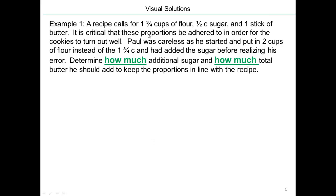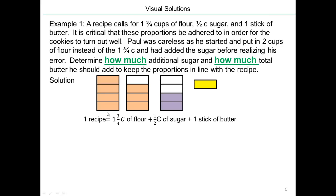Let's draw a picture to represent the original recipe. So we have one cup and here's three quarters cup. So one and three quarters cup of flour, half a cup of sugar, and one stick of butter. That's our original recipe.